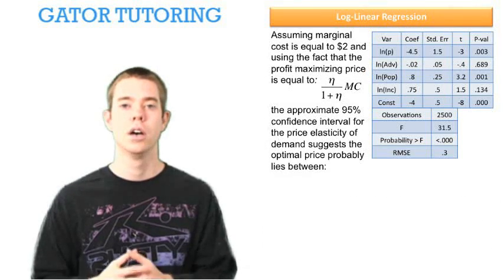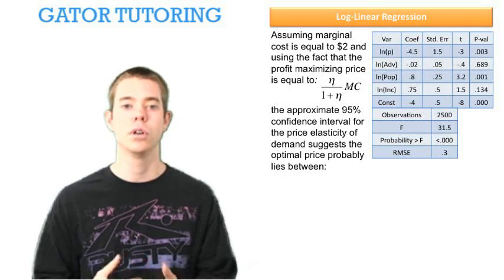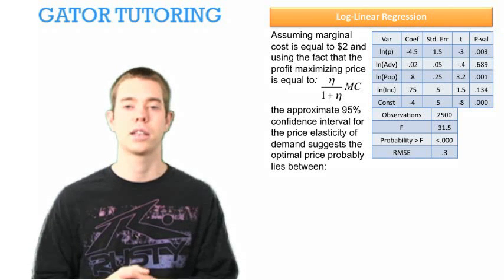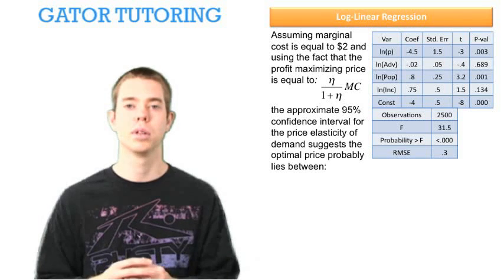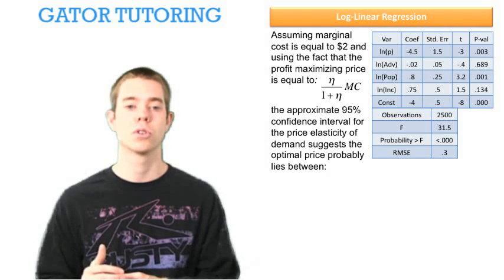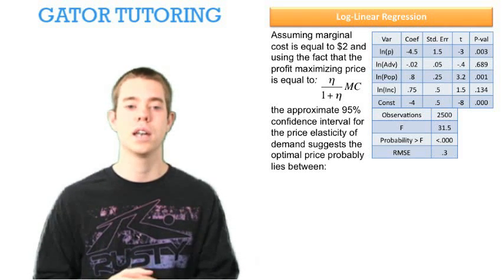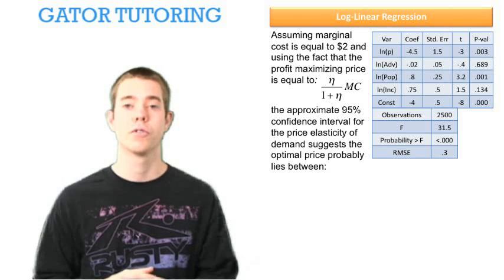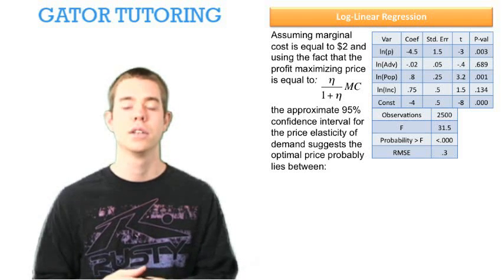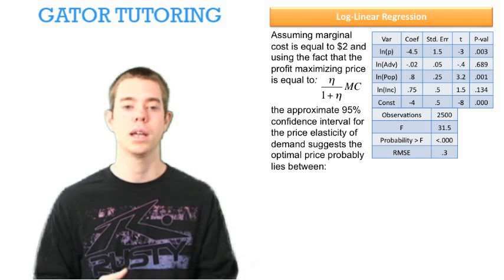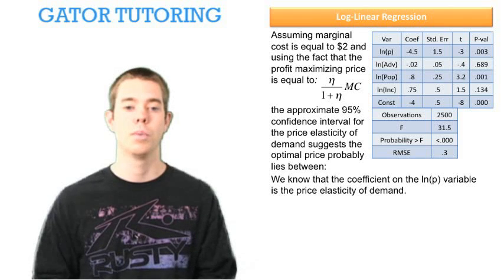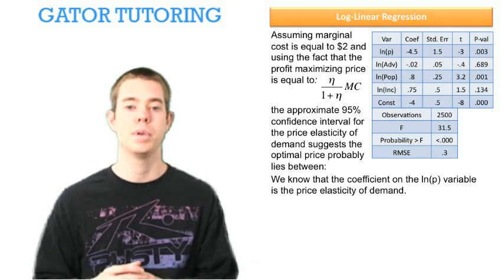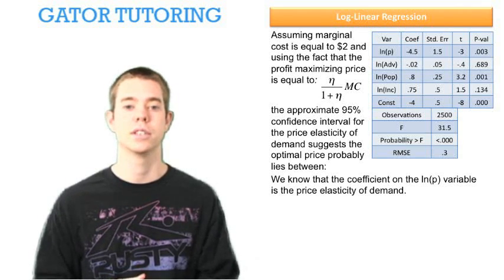The question is, assuming marginal cost is equal to $2 and using the fact that the profit maximizing price is the elasticity over one plus the elasticity times the marginal cost, the approximate 95% confidence interval for the price elasticity of demand suggests the optimal price probably lies between blank. So it's talking about a confidence interval for the price elasticity of demand. We know that the coefficient on the ln(p) variable is the price elasticity of demand.